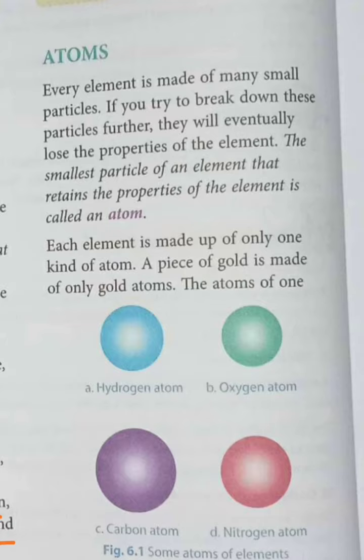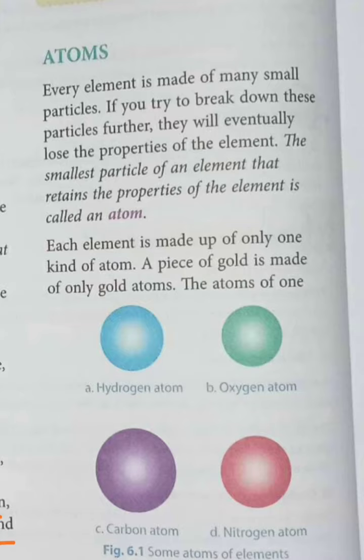Every element is made of many small particles. For example, iron, gold — various ornaments made of gold — these are elements. The smallest whole particle is called an atom. If you try to break down these particles further, they will eventually lose the properties of the element.